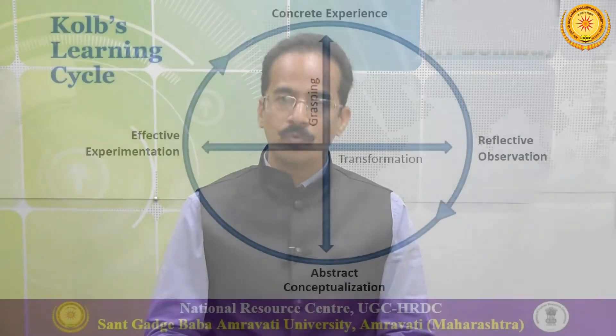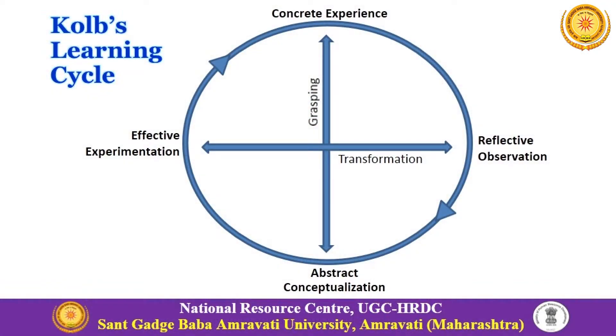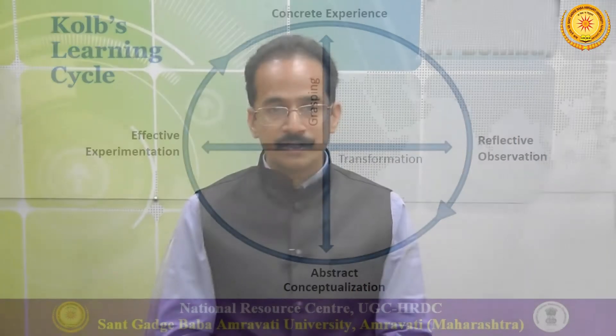A learning cycle goes through all four stages. A cycle can start from any point — maybe observation, maybe experiment, maybe abstract conceptualization or concrete experience — but it is supposed to go through all four stages to complete the learning process.